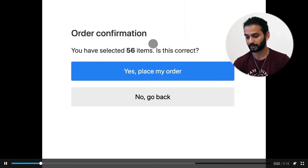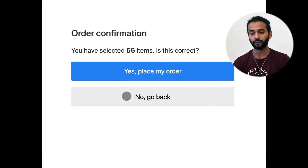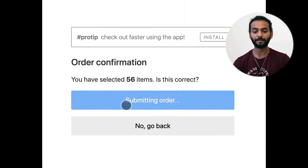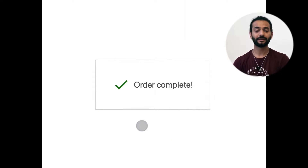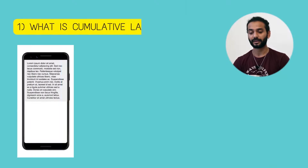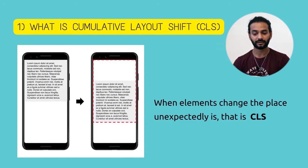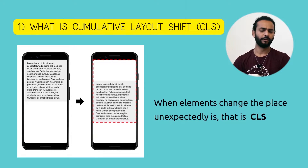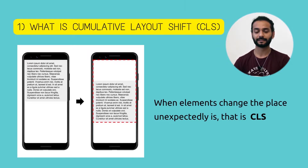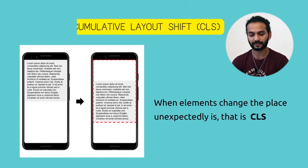For example, when you're about to click on a link or button and suddenly the button or link moves and you mistakenly click on something else — that is CLS. Another example: when a user loads a page, text appears very fast, and within a few seconds when the page fully loads, the text moves to the middle of the page. No one expected that, so this is CLS.